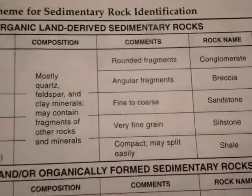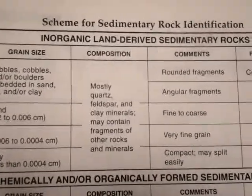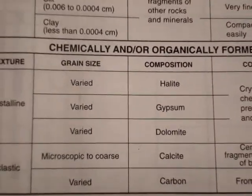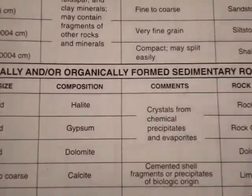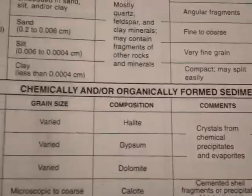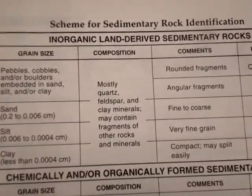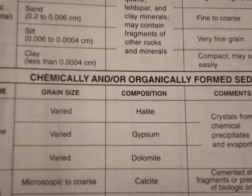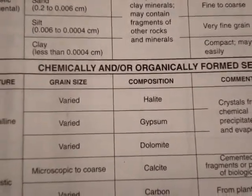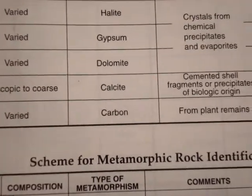For sedimentary rocks, the tables are separated into two main categories: inorganic land-derived sedimentary rocks, and chemically or organically formed sedimentary rocks. Those formed by land from weathering and erosion, and others chemically or organically from evaporation, precipitation, or with the combination of fossils.